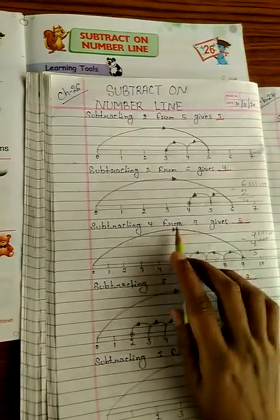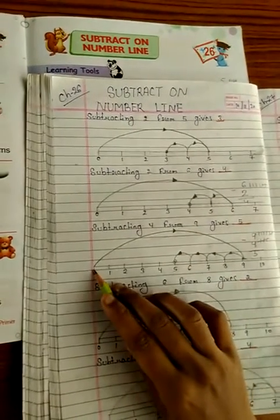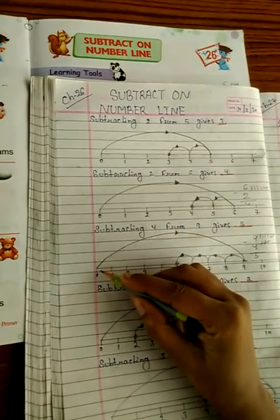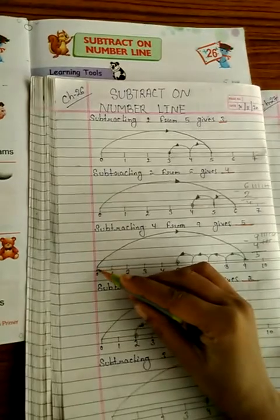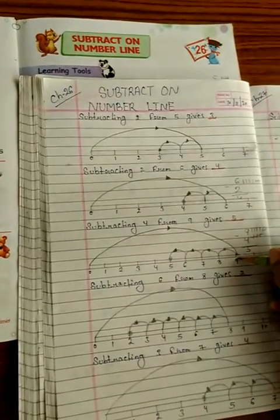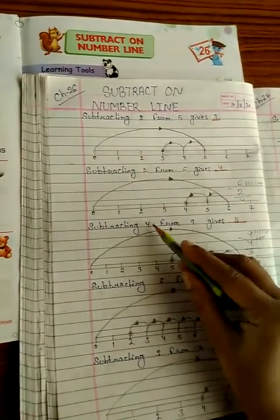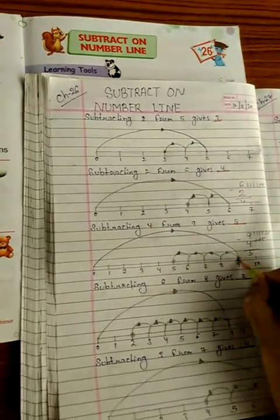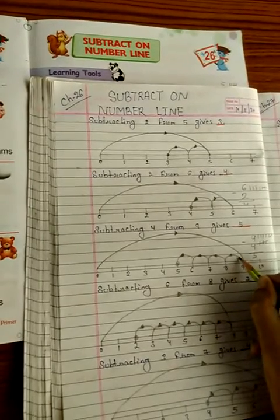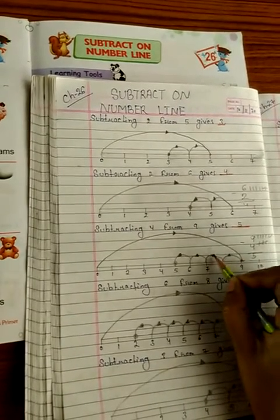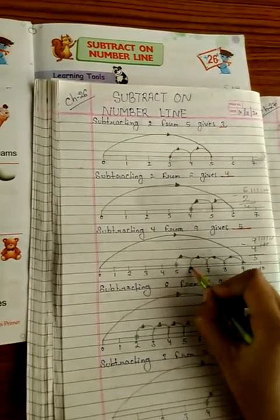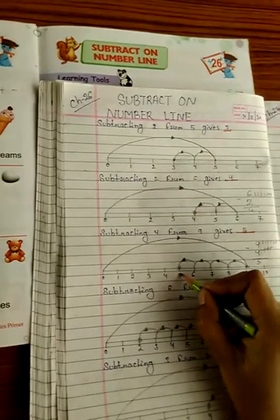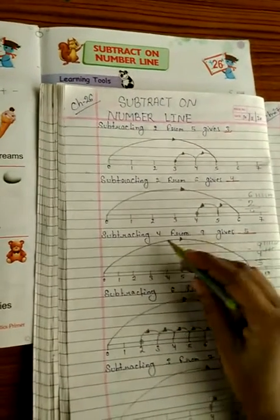First, the number is 9 — 9 minus 4 — starting point 0, draw one line from 0 to 9. After that, 4 steps back: from 9, 1 step back is 8, again 1 step back is 7, again 1 step back is 6, again 1 step back is 5. So the answer — 9 minus 4 is equal to 5.